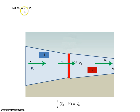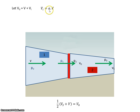So V0 is equal to V plus VI, where VI is just the freestream velocity multiplied by some factor — let's call it an inflow factor, A.